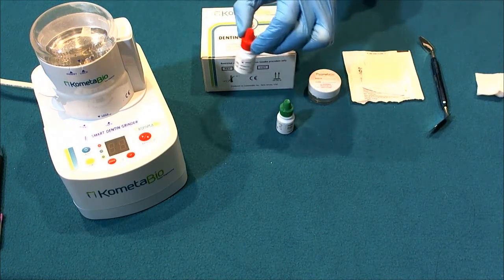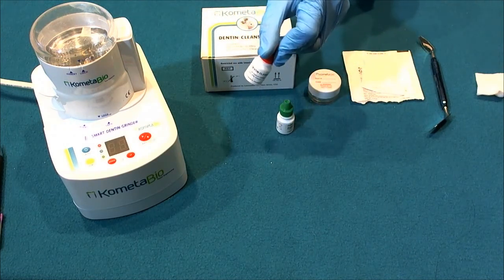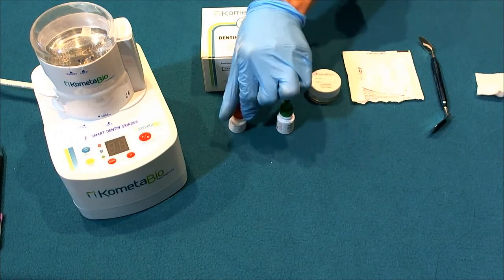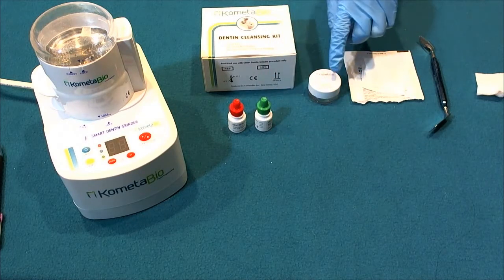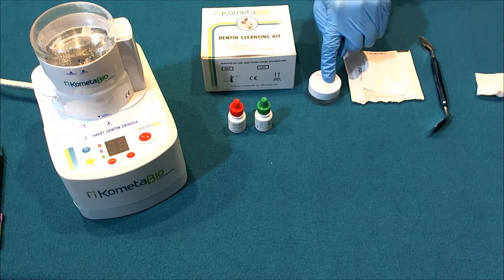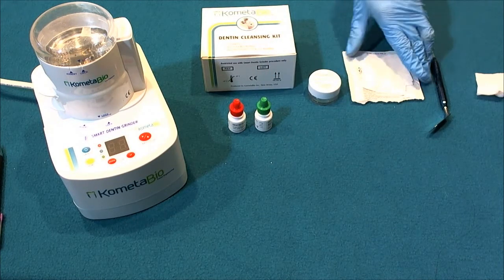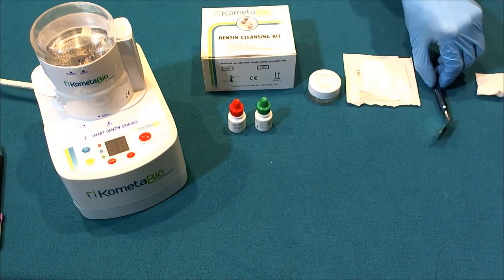It includes the dentin cleanser, the bottle with the red cap, includes the dentin wash, the bottle with the green cap, you also need a mixing dish that typically comes with the kit, you need sterile gauze and a spatula.